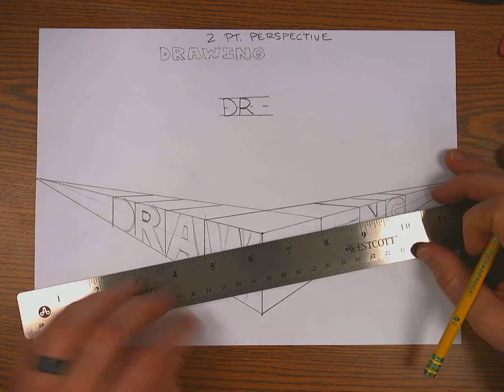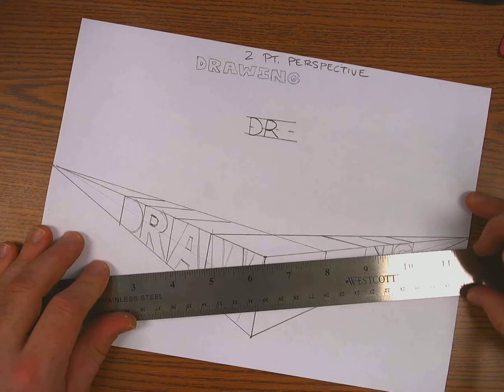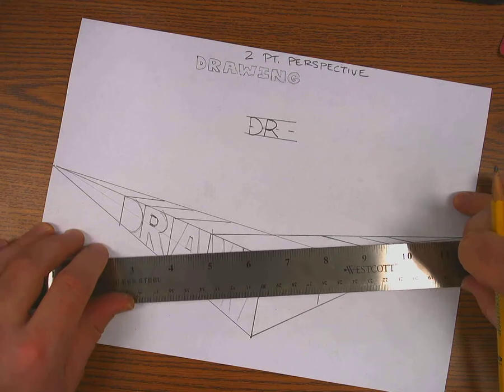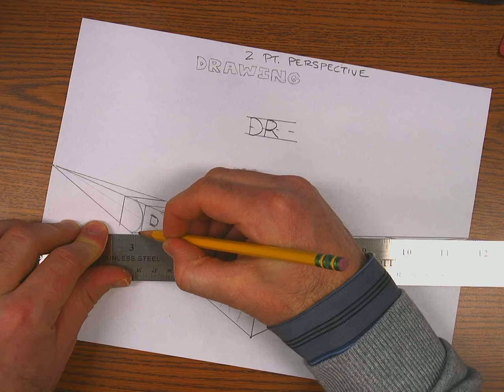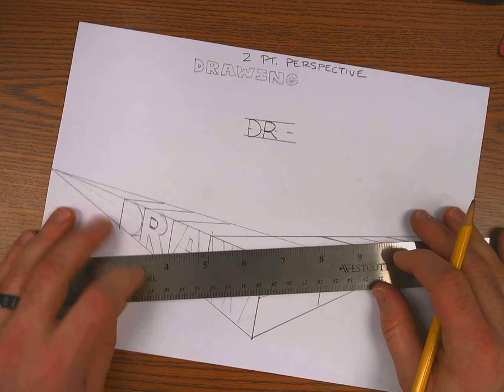Okay, anytime there's a curve on a letter, you want to line your ruler up with the vanishing point and swing it up until it hits that curve. And then I'll draw until I hit the letter next to it, because that's going to be behind the R.